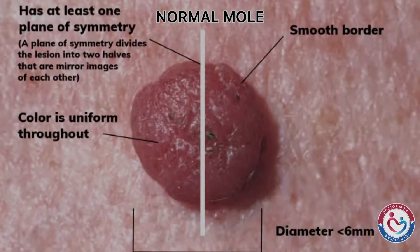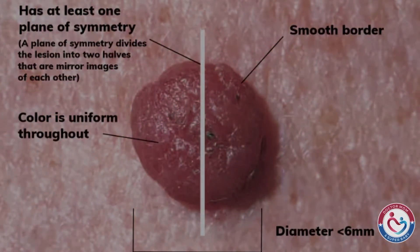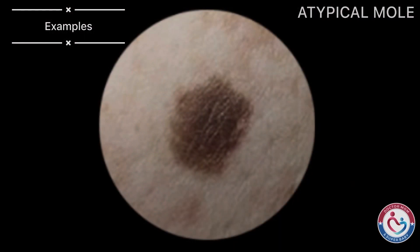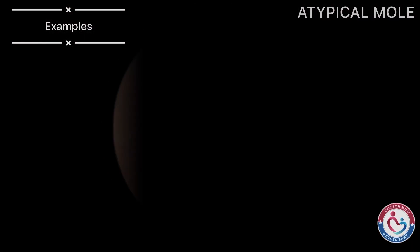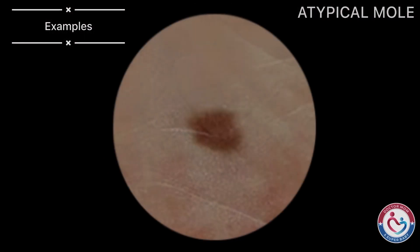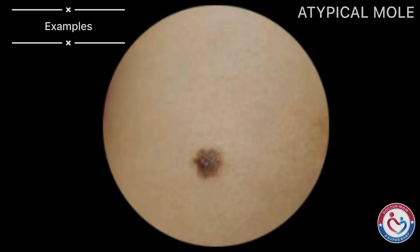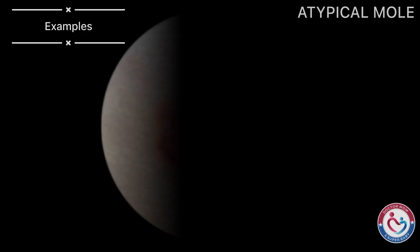In a normal mole, there will be a smooth border, symmetrical shape, uniform color, and a diameter less than 6mm.